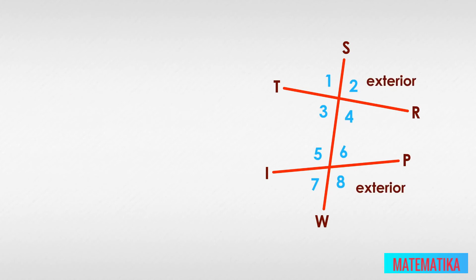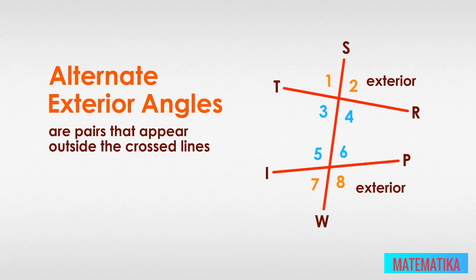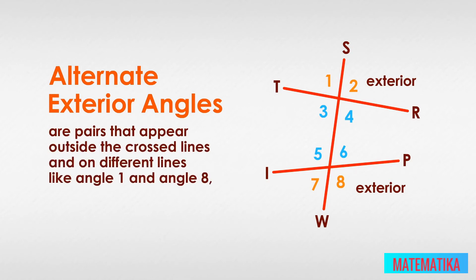Ending with angle POW as 8. The four exterior angles are angle 1, angle 2, angle 7, and angle 8. Alternate exterior angles are pairs that appear outside the crossed lines and on different sides, like angle 1 and angle 8, and angle 2 and angle 7.